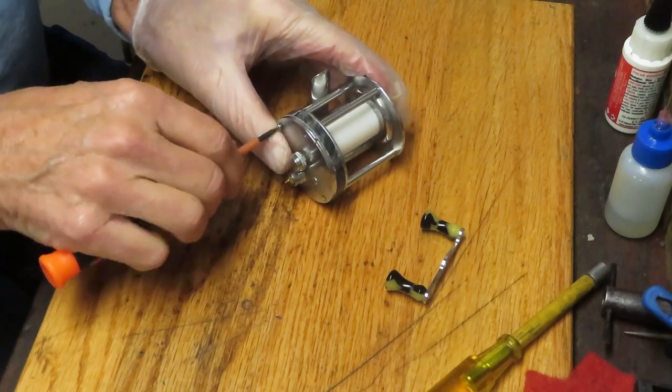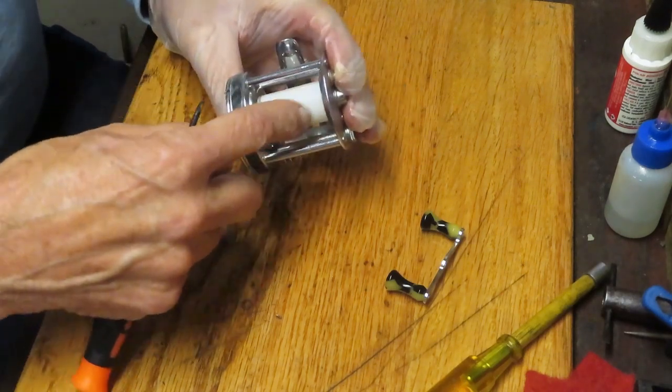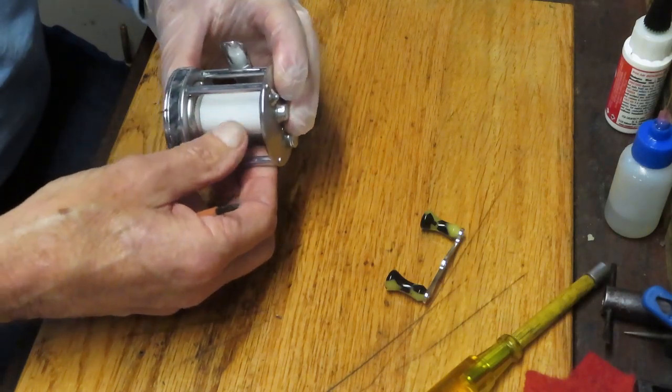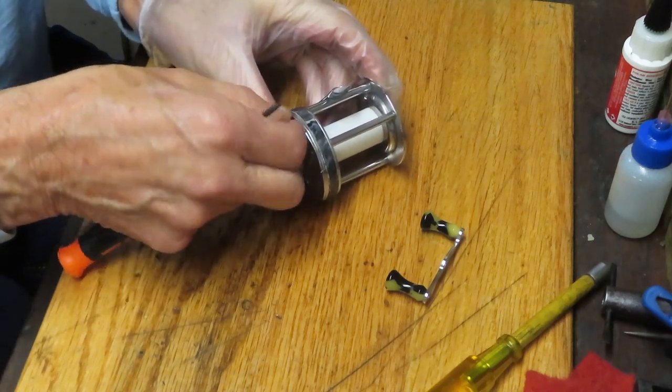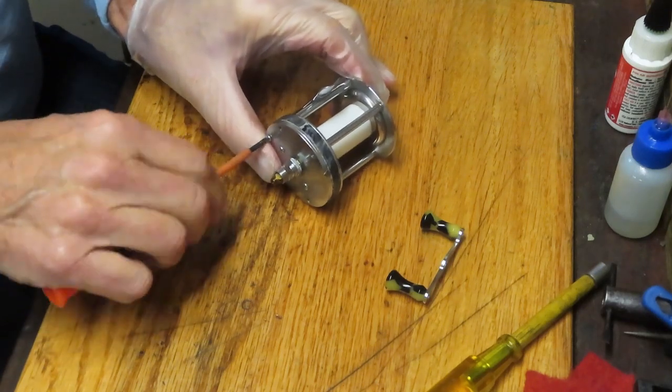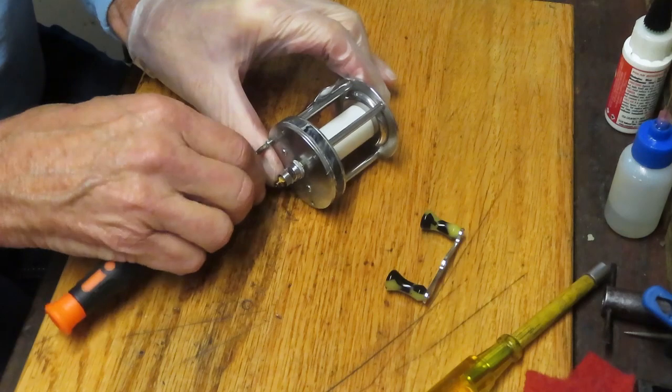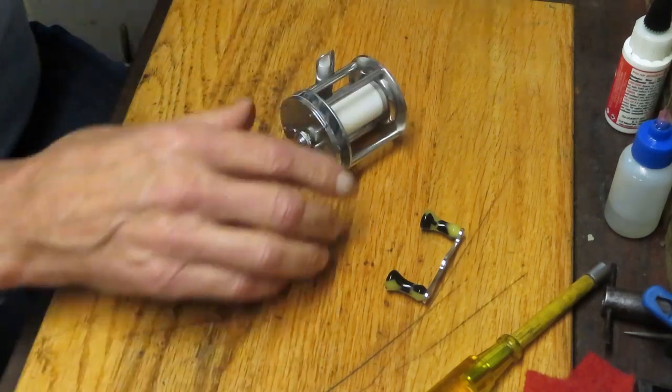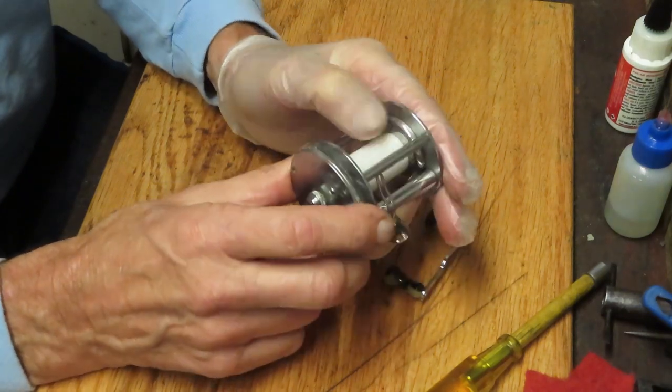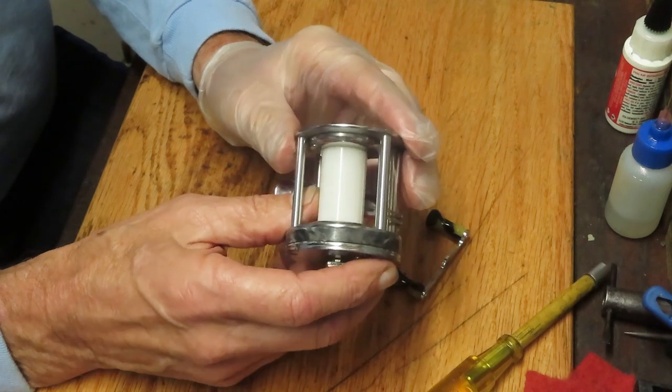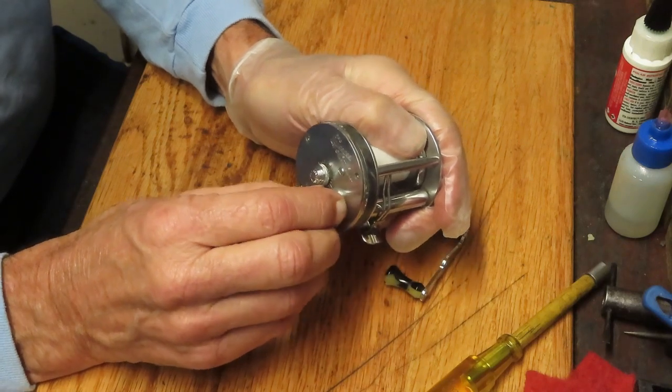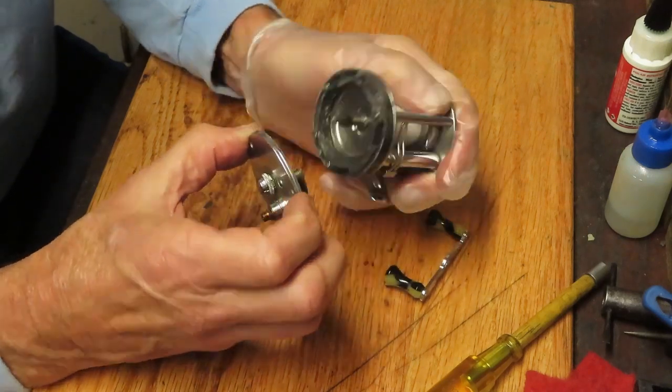This reel has a line saver. It's a little insert here. Generally you can find the split in it. Line was very expensive back in 1946, so you wanted to conserve as much line as you could. If you were using this reel in a freshwater environment, you don't need 300 yards of line. So that space saver there would allow you to just line up the reel on the base.